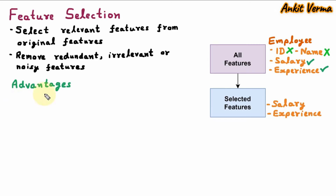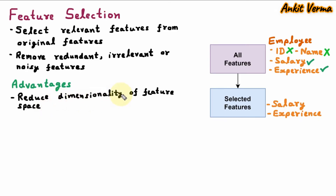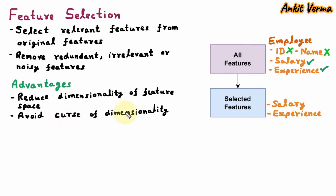Now we are discussing the advantages of feature selection techniques. The first is they reduce dimensionality of feature space — meaning the number of features available. So it will reduce those features. When we have fewer features, it is easy for the algorithm to understand and compute. Next is it avoids the curse of dimensionality, which says that when a model reaches the optimum number of features and we further increase them, the performance of the model decreases.